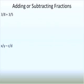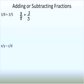Let's look first at how we add two fractions with numbers. We're going to add 3 eighths plus 3 fifths. If the denominators are the same, we just add the numerators. But if the denominators are not the same, we need to find a least common denominator. The least common denominator for 8 and 5 is 40.